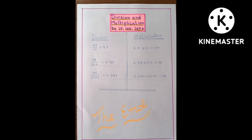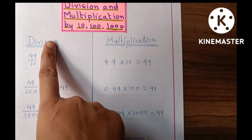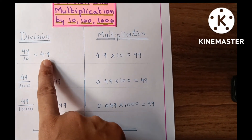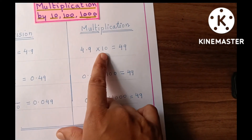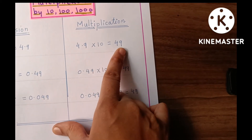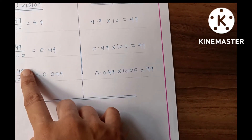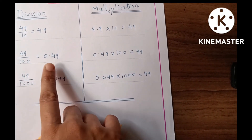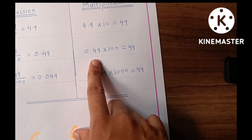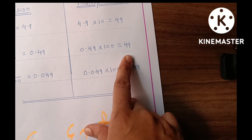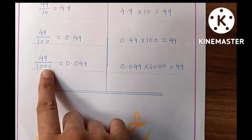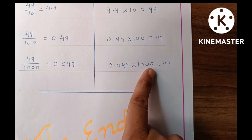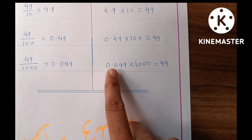Here is division and multiplication by ten, hundred, and thousand. Here is division and here is the answer. Here is the division by thousand and the answer. Here is multiplication by hundred. Here is division by thousand and the answer. Here is multiplication by thousand with a decimal number, and here is the product.